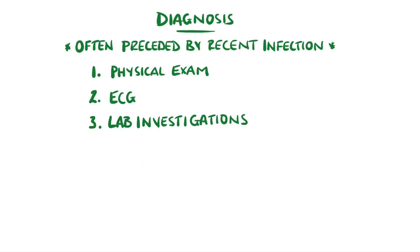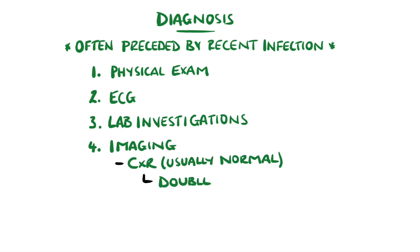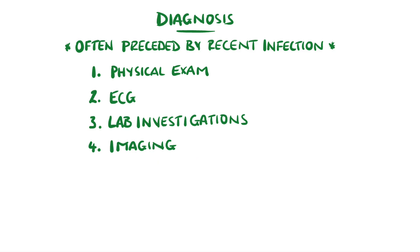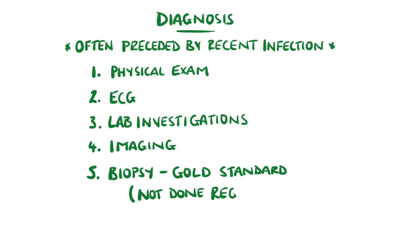For imaging, a chest X-ray may show a double heart border suggestive of excess fluid in the pericardium, but in many cases the chest X-ray is normal. Echocardiography is done to better visualize the fluid within the pericardium and will also show if there is dysfunction of the heart. MRI can be done, which shows in greater detail the location of inflammation within the heart. The overall gold standard for diagnosis is a biopsy, but this is required in only a few selective patients.